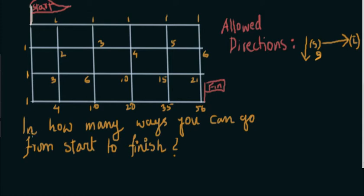So, what's the question? In how many ways can you go from start to finish? So this is the start point, this is the end point. And there are two constraints. Let's check what the constraints are.